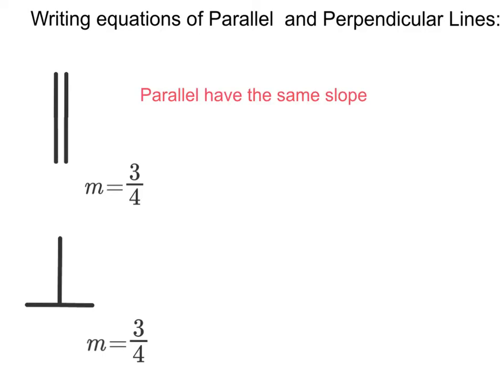Parallel lines always have the same slope. So if we have one line with a slope of 3/4, we know any other line that is parallel with that line must also have a slope of 3/4.